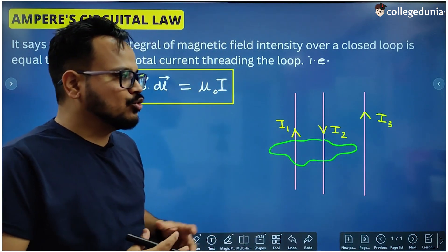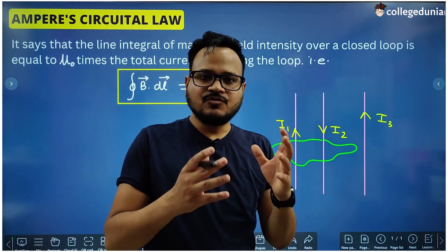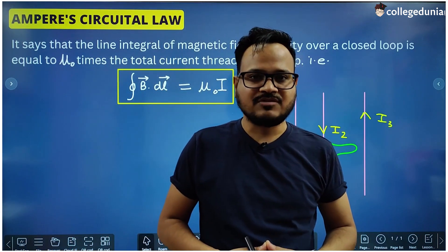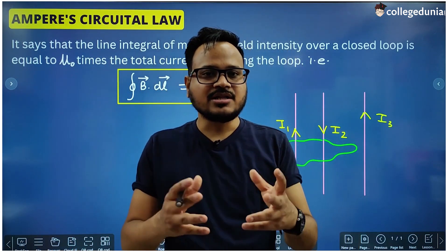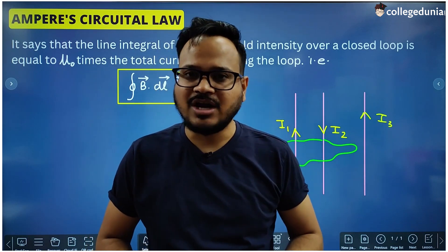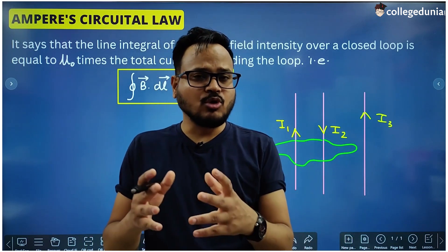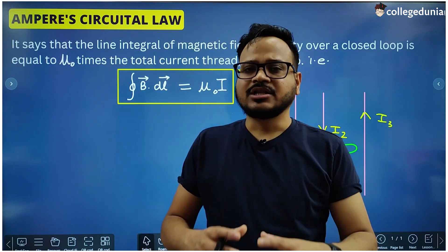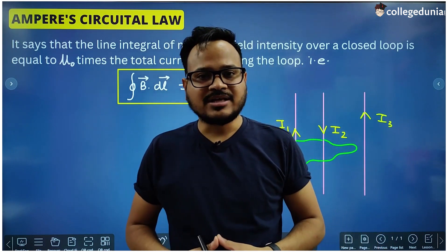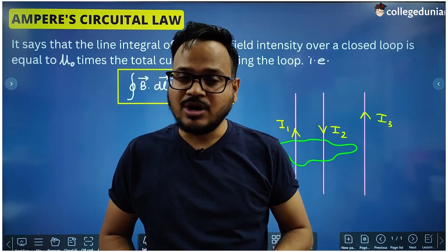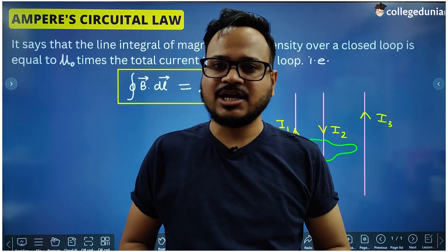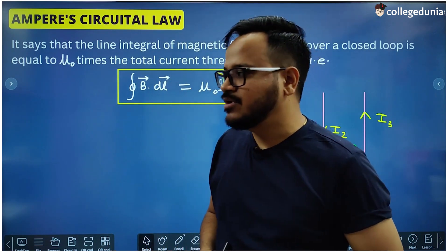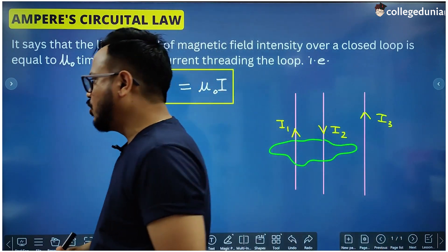This law is going to do the same thing which we have already discussed can be achieved by Biot-Savart's law, that is to find the magnitude of magnetic field around a current carrying conductor. So both Biot-Savart's law and Ampere's Circuital Law do the same work — they give us a formula to find the magnitude of magnetic field around current carrying conductors, but there is some difference between the laws.